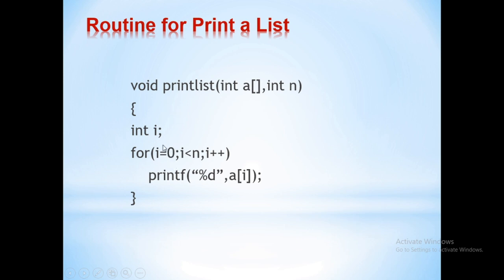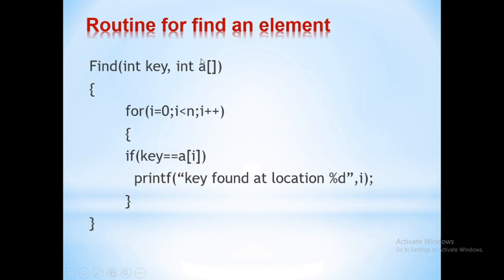Next we'll see how to print a list. Printing a list is just displaying all the elements from the starting index zero to the last index n. We simply place a printf statement inside a for loop. This routine will print all the elements of the list.